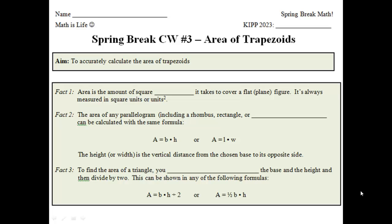Alright, tipsters, if you've made it here, you're up to the last classwork. This is classwork number 3. Please make sure you put your heading up here and the name of your college over here. It should say Spring Break Classwork Number 3, Area of Trapezoids, and not surprisingly, the aim is to accurately calculate the area of trapezoids.